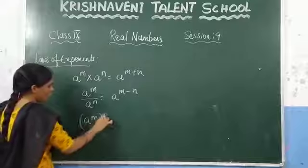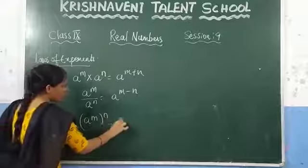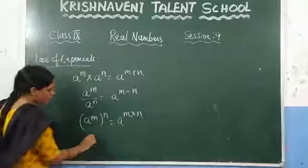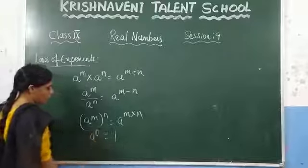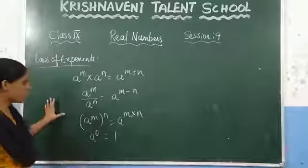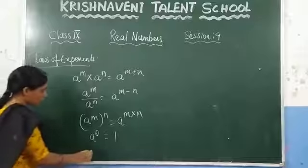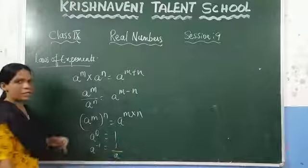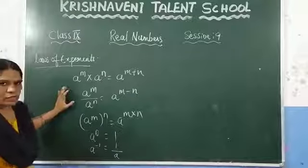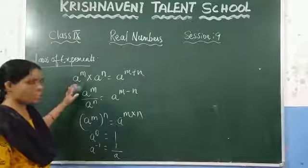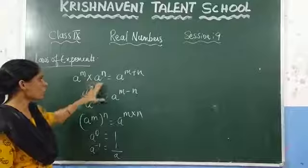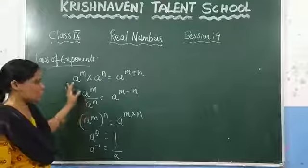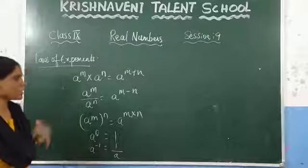We also discussed that A power M, whole power N, is nothing but A power M into N. And anything to the power of 0 is 1. And A power minus 1 is nothing but 1 by A. These we studied in earlier class. Now we are going to use these laws of exponents in the next exercise.